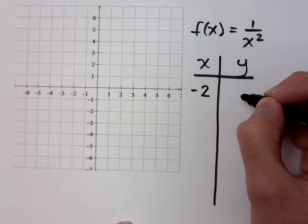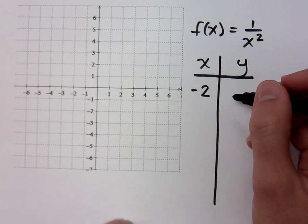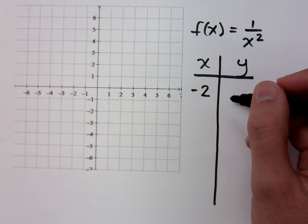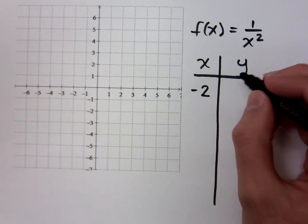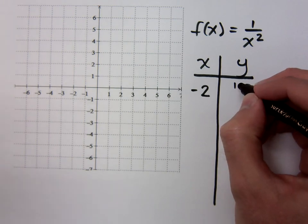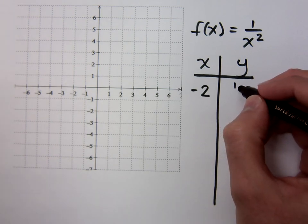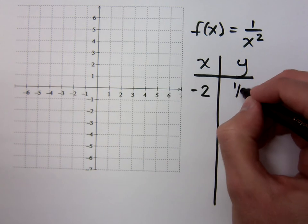If I plug in negative 2, what do I get? I get 1 fourth. Not only does this guy do the reciprocal, but he also squares it. So the reciprocal of negative 2 is negative 1 half, but squared gives you 1 fourth.